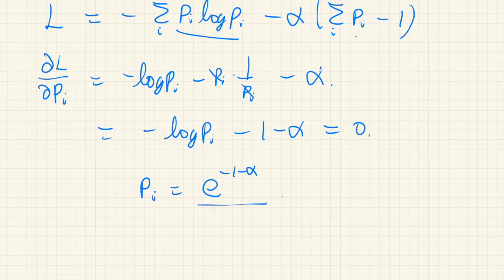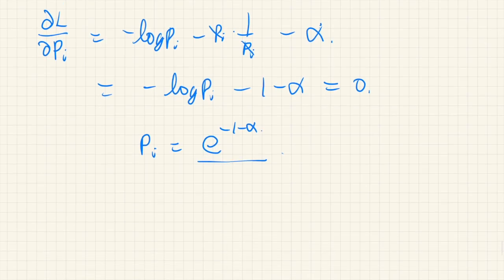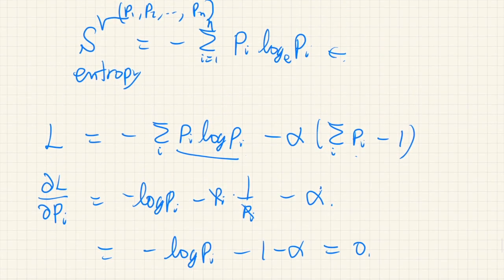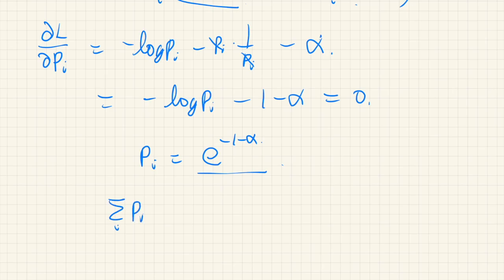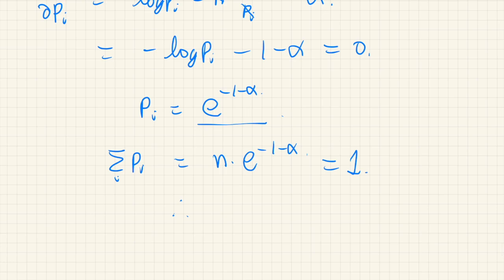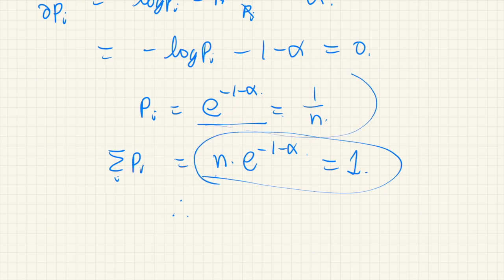Now look at this term — it doesn't depend on i, so it's a constant. Going back to the normalization constraint, if we sum over all i that is just n times this factor, and this equals 1. So this constant equals 1 over n, meaning pi equals 1/n for all i — it's a uniform distribution.